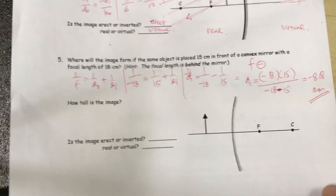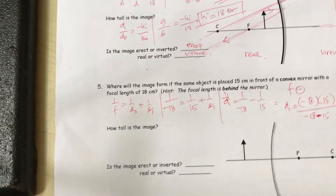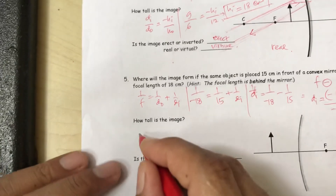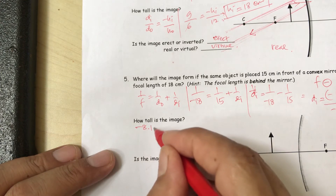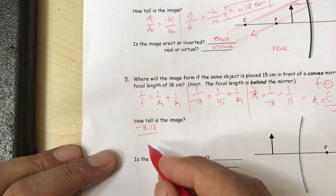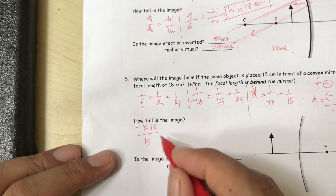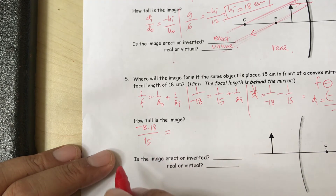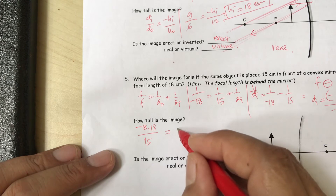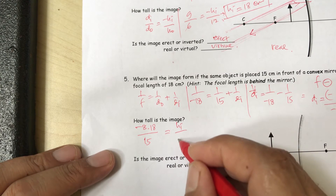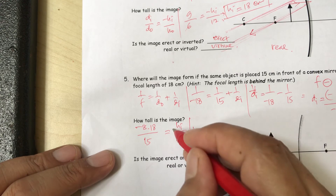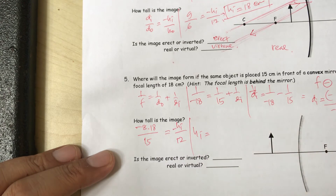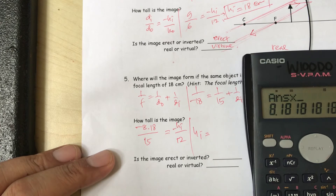For the height of the image: d-i is negative 8.18, d-o is 15, h-o is 12. So h-i equals negative 8.18 times 12 divided by 15, giving approximately negative 6.5 centimeters — but since d-i is negative, h-i is positive (erect).